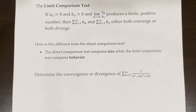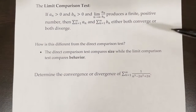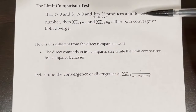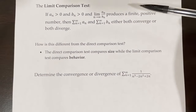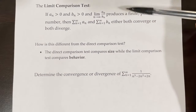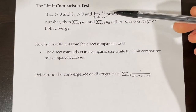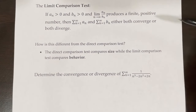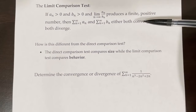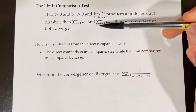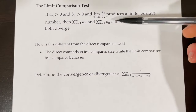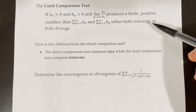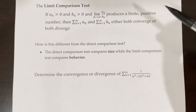In our second video for lesson 10.6, we'll be exploring the limit comparison test, which states that if a_n is greater than 0 and b_n is greater than 0, and the limit as n approaches infinity of a_n over b_n produces a finite positive number, then the series from n equals 1 to infinity of a_n and the series of b_n either both converge or both diverge.